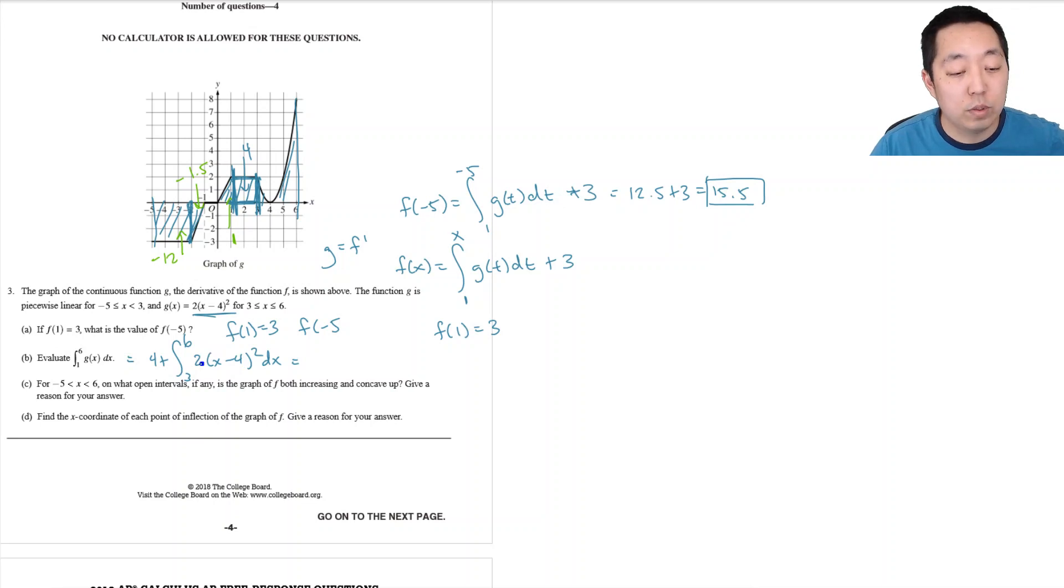And this by power rule or you can do u substitution for u equals x minus 4, but it's 4 plus 2 x minus 4 cubed divided by 3 evaluated from 3 to 6.